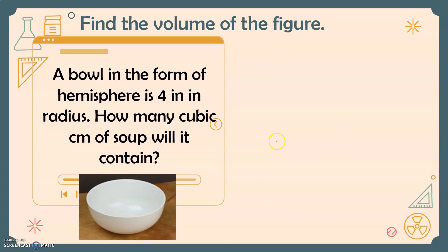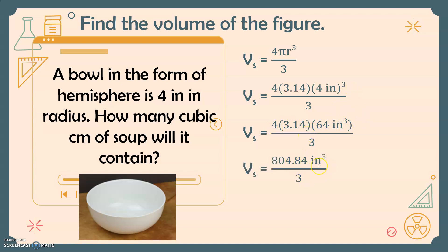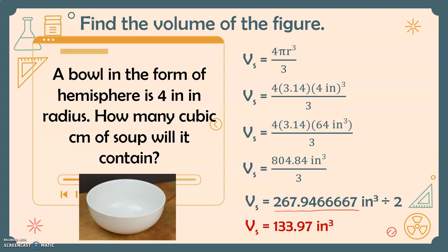For our last example, a bowl in the form of a hemisphere has a radius of four inches. How many cubic inches of soup will it contain? Since we have a hemisphere, we first find the volume of the entire sphere. Substituting the radius of four inches: four times 3.14 times four inches cubed divided by three. Four inches cubed is 64 cubic inches, giving 804.84 cubic inches before dividing by three, which yields 267.946667 cubic inches. Dividing by two for the hemisphere gives us 133.97 cubic inches.